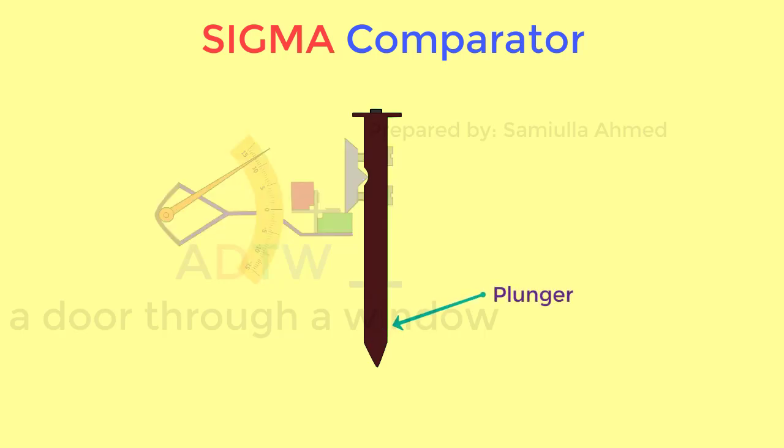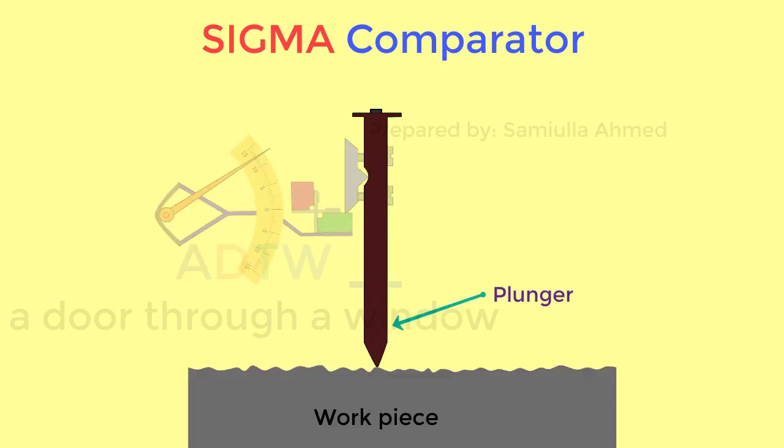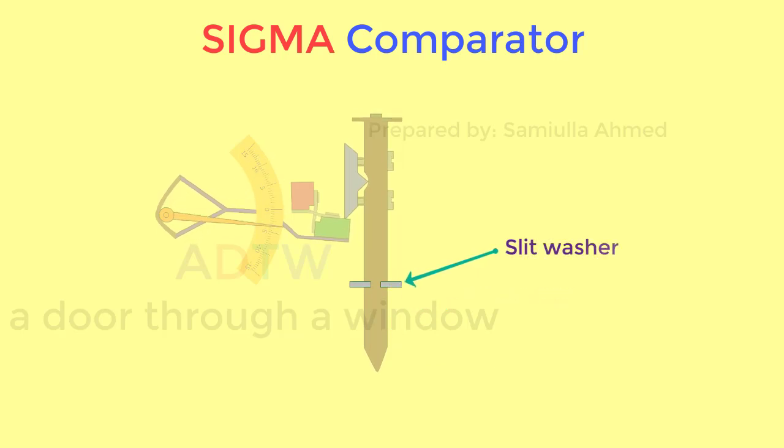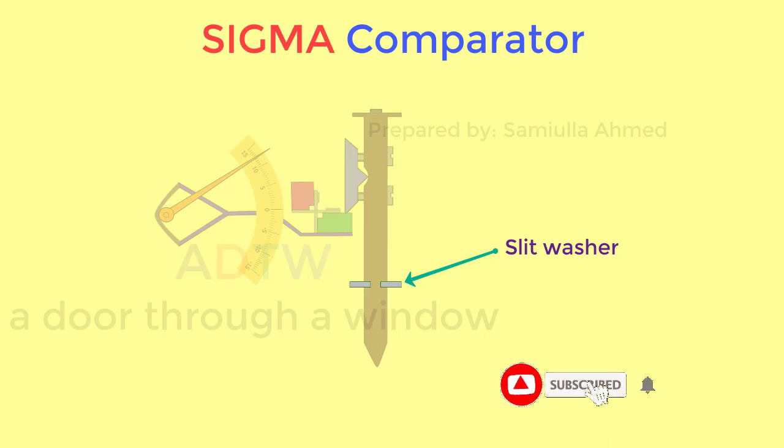The plunger is the sensing element that is in contact with the workpiece. It moves on the slit washer which provides frictionless linear movement and also prevents the rotation of the plunger about its axis.